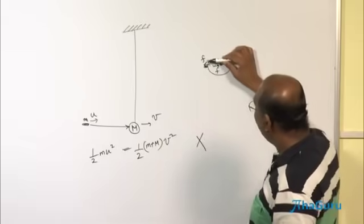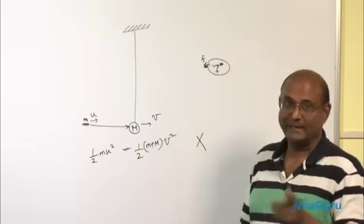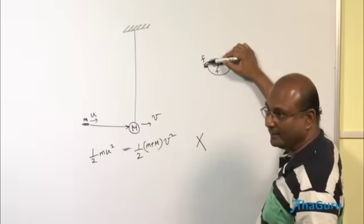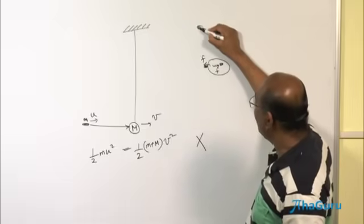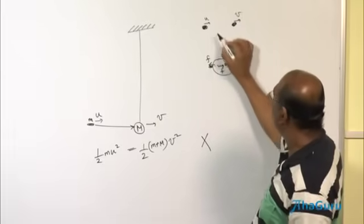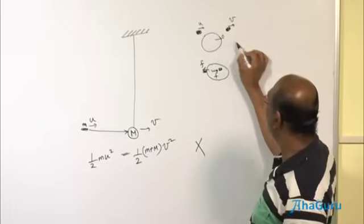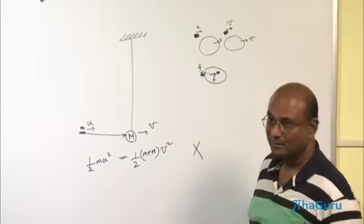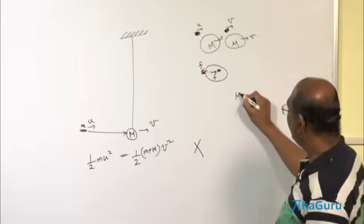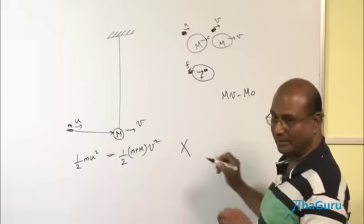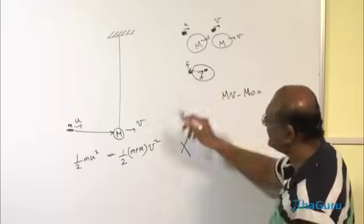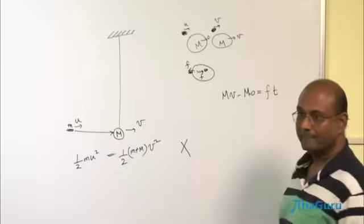So the momentum contributed by f, which is f into t, impulse contributes momentum. f into t on that small little thing, it will be like this. So this guy starts, the little thing starts with u and ends up with v. This sack starts with 0 and ends up with v. Why does the sack go from 0 to v? Because this force makes the sack move, is force into time.